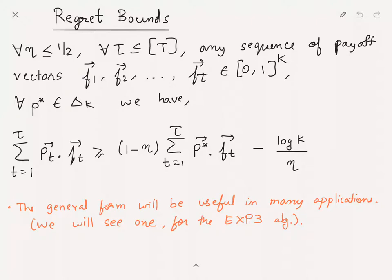What does this general regret bound say? It says that for any choice of eta between zero and half, and for any time step tau which is less than or equal to T, where tau is not known a priori to the algorithm, and any sequence of payoff vectors f1, f2, up till f_tau, where the payoff vector fi can be adaptive to the actions from a1 to at-1 (the adversary can look at all your actions except the current time step and then adaptively give you the payoff vector), and each of these payoff vectors should lie in the range [0,1]^k. Suppose we have this and you consider any distribution, any other distribution p*, which is a distribution over the actions.